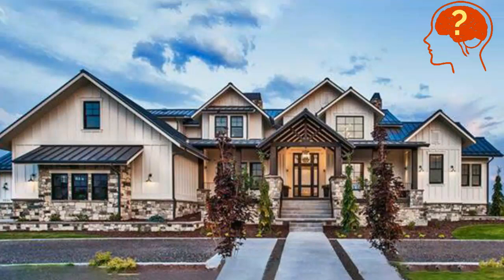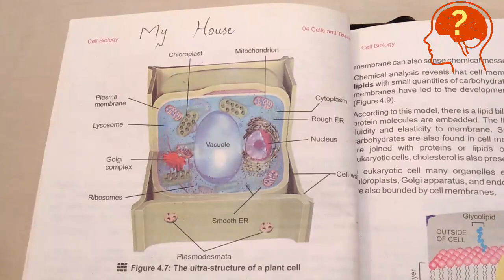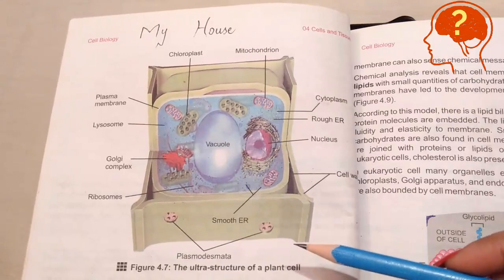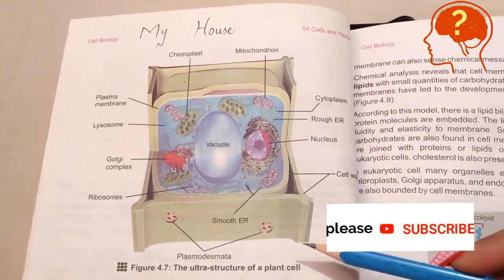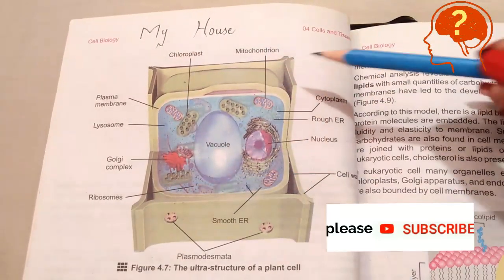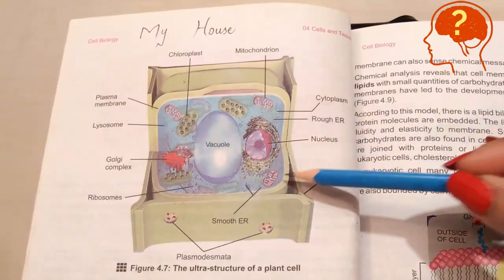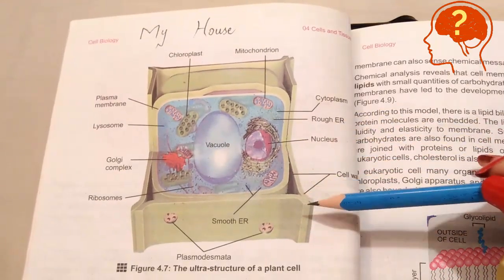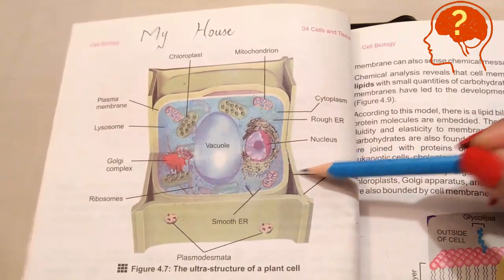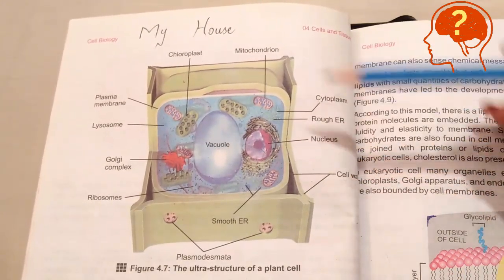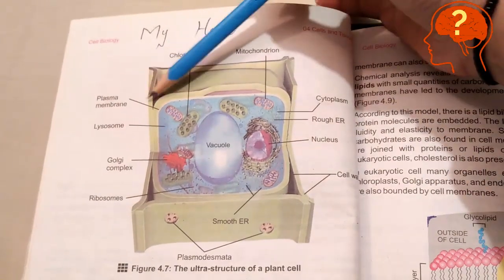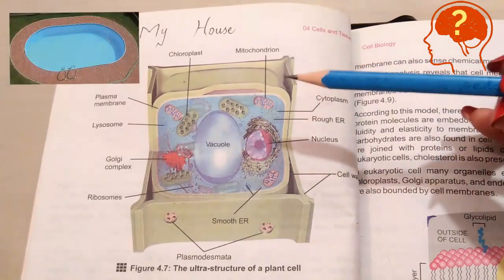Our story is: my house. Suppose you want to memorize the structure of the plant cell — make a story of this structure. Suppose you have a big square-shaped house covered by a double wall. The outer wall is made of cement — compare it with the cell wall because cement is hard and the cell wall is also hard. The second wall is painted — compare this painted wall with the plasma membrane.